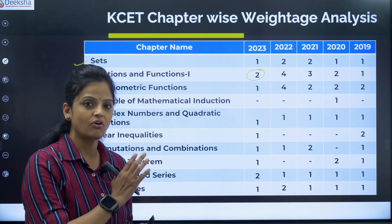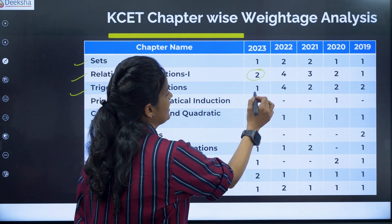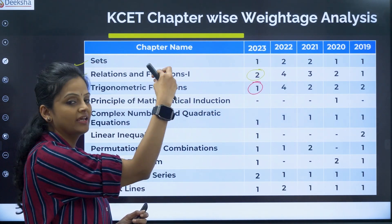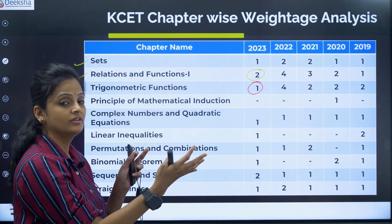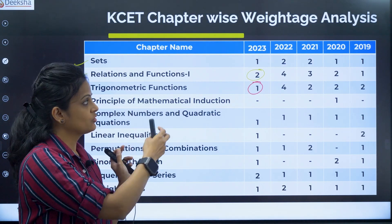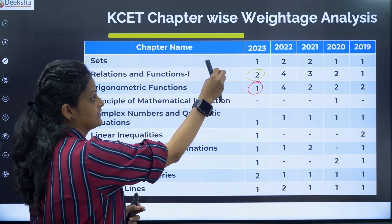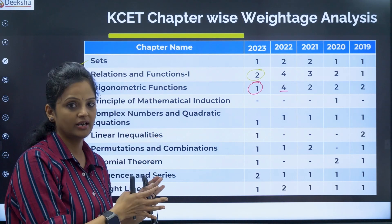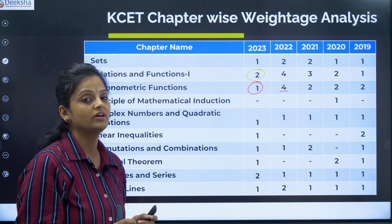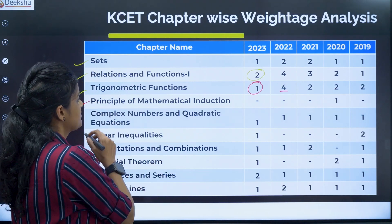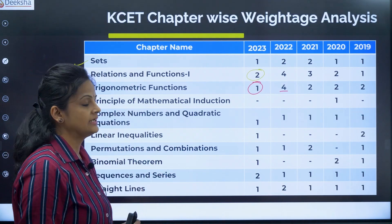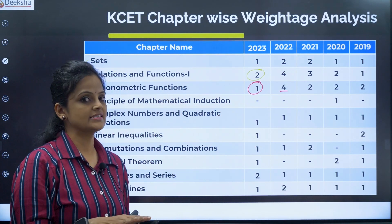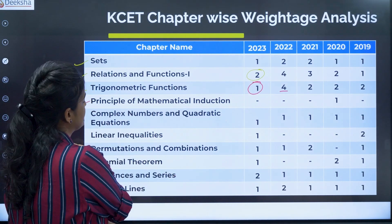You have to recall all the concepts in Trigonometric Functions. Comparatively, only one question now because some concepts have been deleted. In 2022, four questions were there, but now only one. Even though it is a huge chapter, you cannot leave it. Principle of Mathematical Induction has been taken off — consistently from 2021 we don't have those questions, and this year the chapter is deleted. So don't worry about that chapter.